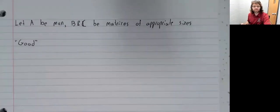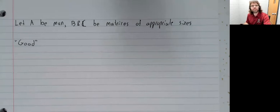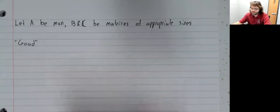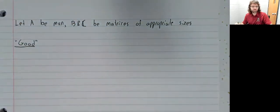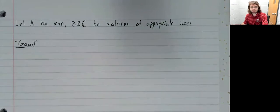So let's let A be an M by N matrix, and let's let B and C be matrices of the appropriate dimensions so that all of the multiplication I'm about to write down is defined. Let's start with some good points. Some ways in which matrix multiplication acts the way you'd expect it to.